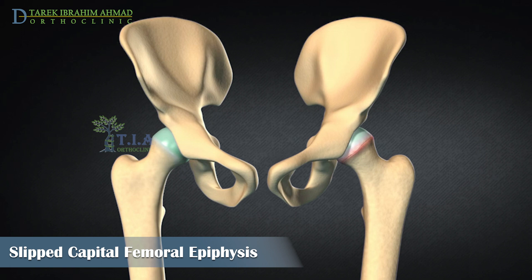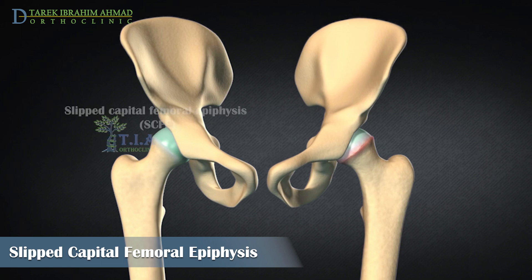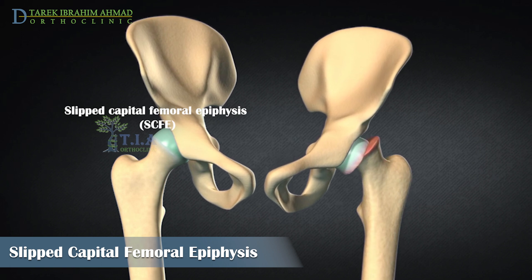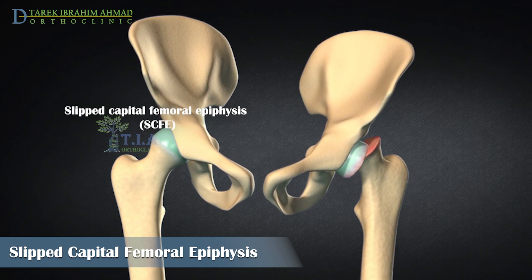Slipped capital femoral epiphysis is a disorder of adolescence in which the growth plate is damaged and the femoral head slips down and backward off the neck of the bone at the growth plate.